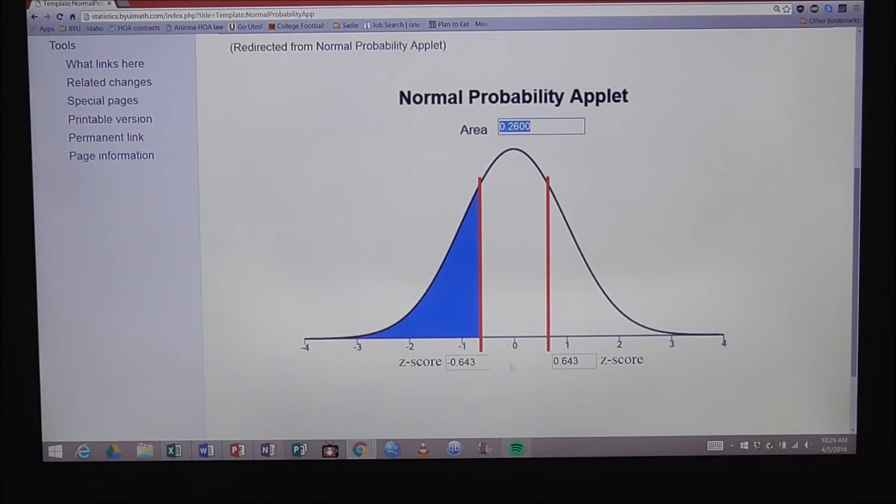Once I hit enter, it's going to move these red lines such that the blue area will be 26 percent of the area under the curve. Now that I've hit enter, you can see that the red line on the left side is at a z-score of negative 0.643, and the area highlighted in blue is representing 26 percent of the area under the normal standard normal distribution.